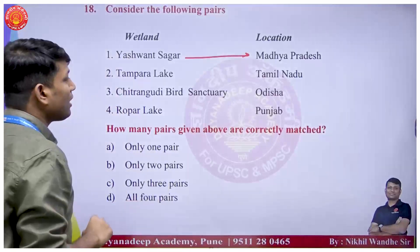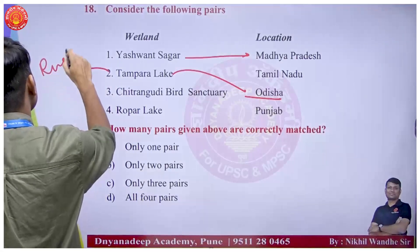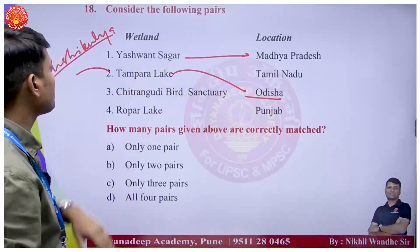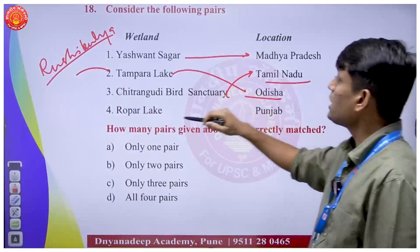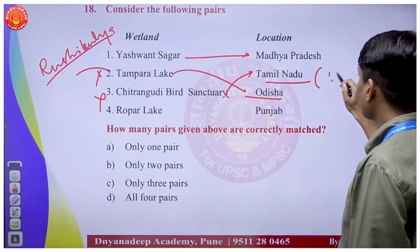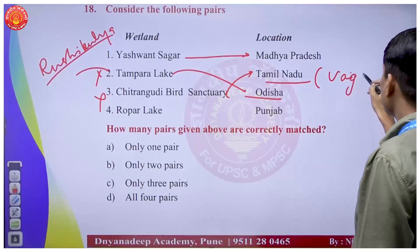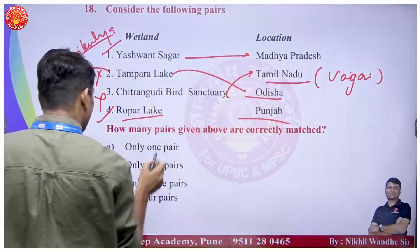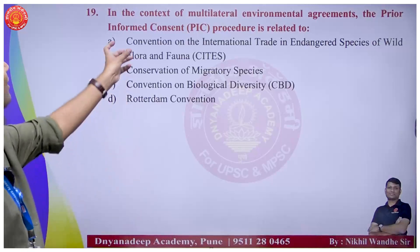Regarding wetland-lake mapping: Tampara Lake is in Odisha on the banks of the Rushi Kulia River. Chitrangudi Bird Sanctuary is in Tamil Nadu - formed by river deltas in that area. Rupert Lake is in Punjab. First and fourth pairs are correct - option B, only two pairs are correct.